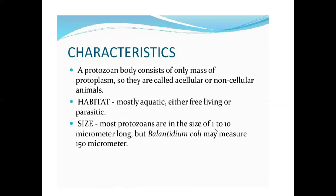Main character sketches of Protozoa. First character: the protozoa body consists of only a mass of protoplasm, so they are called acellular or noncellular animals. Habitat: mostly protozoa are aquatic, either free-living or parasitic. Size: most protozoans are 1 to 10 micrometers long, but Balantidium coli may measure 150 micrometers.